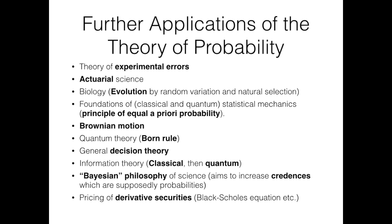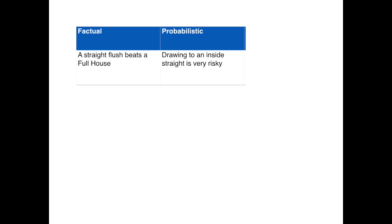Compare these two statements. The first statement specifies a factual, observable property of the world — it specifies what will happen when poker is played and specified hands arise. But the second one is not about physical facts. It is consistent with any sequence of cards arising in a poker game. In fact, it is consistent with any physical events, such as someone repeatedly drawing to an inside straight and repeatedly winning. Yes, it is true that it was risky — the second statement is true — but it doesn't apparently refer to any physical events that actually happened in that case.